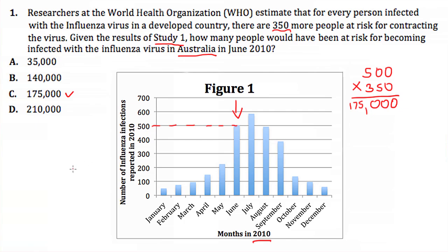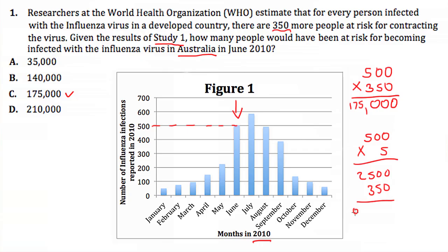You may have read in the passage that Study 1 suggests these numbers are underreported — they expect five times more people to actually have the flu than are reported in the graph. If you take the 500 reported and multiply by 5, you get 2,500 people, and if all 2,500 infect 350 more, you'd get 875,000. However, that's not one of the answer choices, but 175,000 is, so C is our best answer.